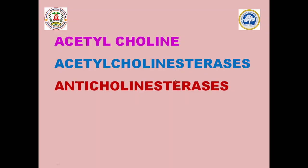Acetylcholinesterase is an enzyme that inactivates or metabolizes acetylcholine. We have two enzymes that metabolize acetylcholine: one is true cholinesterase, otherwise called acetylcholinesterase, and the second one is pseudocholinesterase, otherwise called butyrylcholinesterase. Here, we are going to concentrate more on acetylcholinesterase.